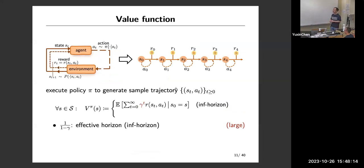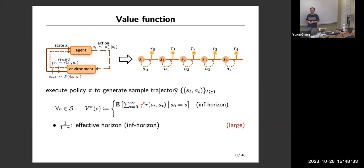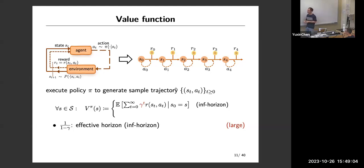The utility function in RL is typically the value function. There are two widely investigated scenarios. The first is the infinite horizon discounted stationary case, where you have an episode that runs until infinity. To make the cumulative reward mathematically meaningful, you include a discount factor gamma to the T, which ensures you only look at rewards within a certain range. This gamma determines an effective horizon of 1/(1-gamma), which is the order of the number of steps that matter.